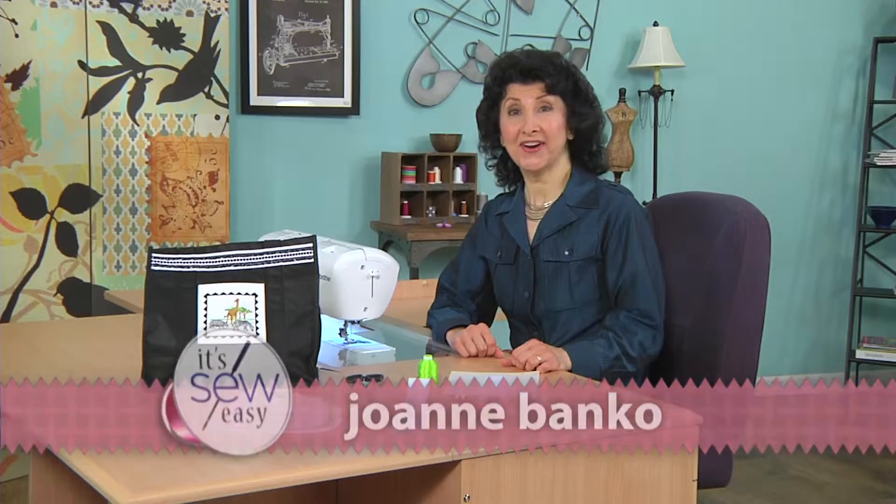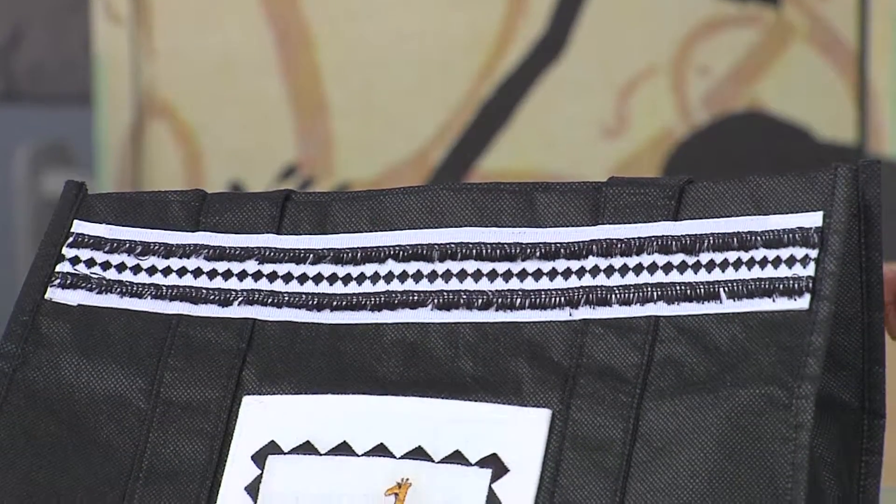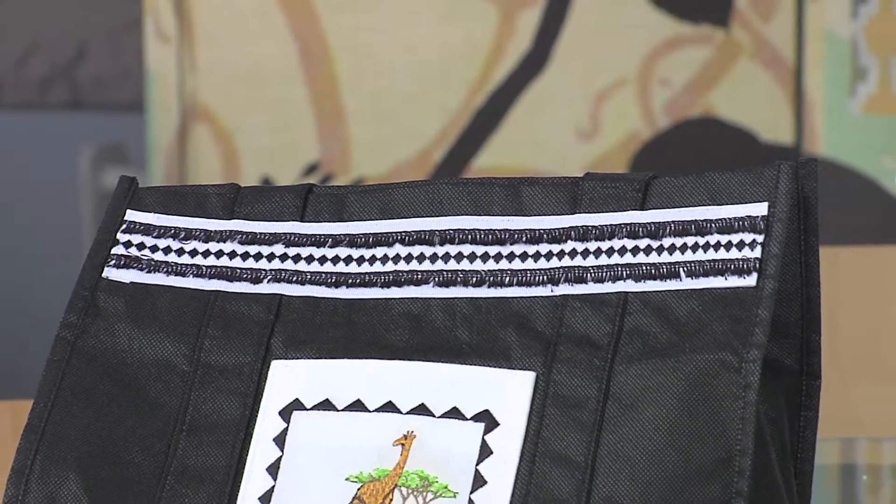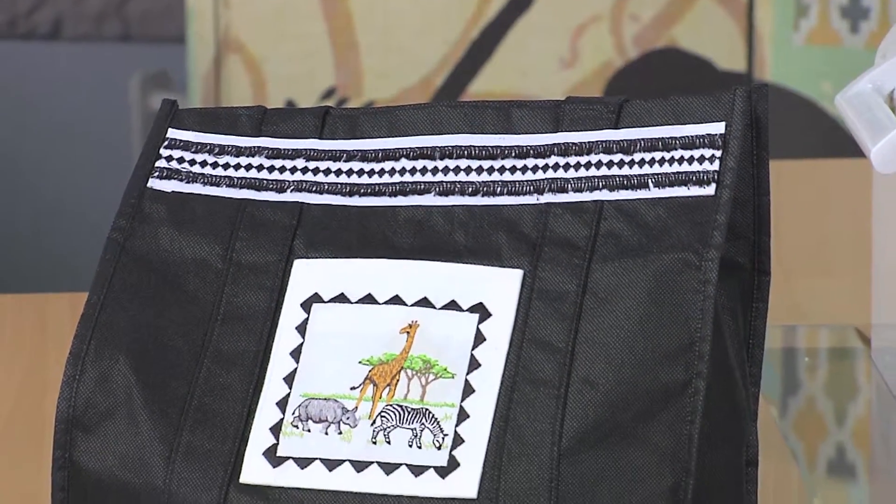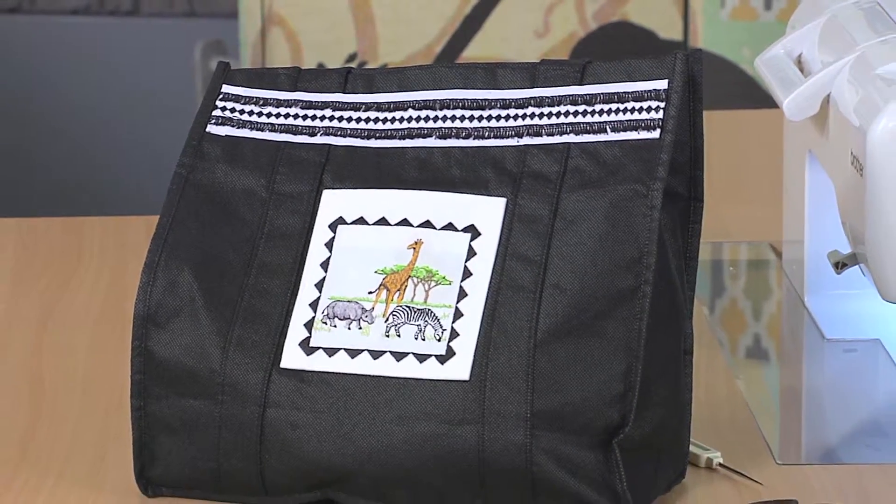Hi, I'm Joanne Banco. When you're heading out on a trip, it's always fun to have a great-looking tote bag to take along. So I've actually got a tote bag project for you today, a quick tip for using the fringe foot to create decorative fringe trim on the ribbon that's sewn to the tote bag. So let me show you how easy it is to do.